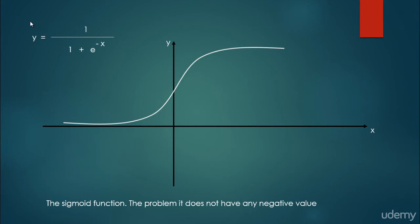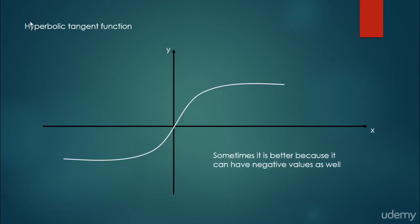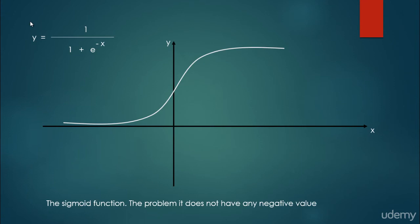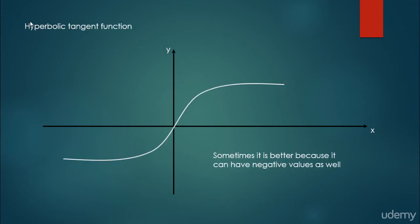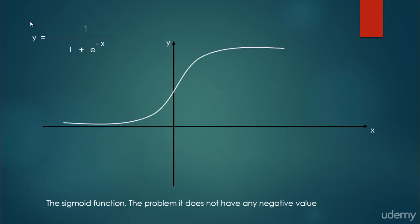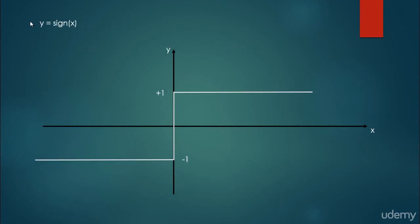Sometimes it's useful to be able to calculate the derivative of the activation function to train the neural network properly — we won't go into that as it's a bit difficult. The sigmoid function is very appropriate for these situations. One problem: it doesn't have any negative values. That's why a third activation function is the hyperbolic tangent function, which is better because it can have negative values as well. These are the three most important activation functions; we will restrict our calculations to the signum function, giving +1 or −1.